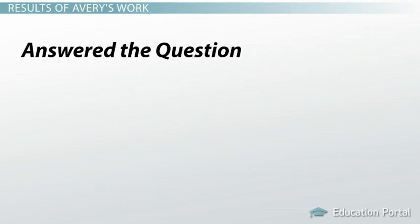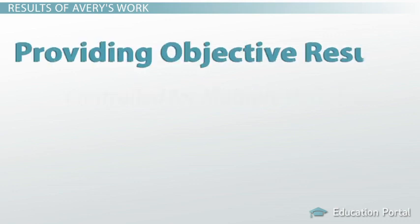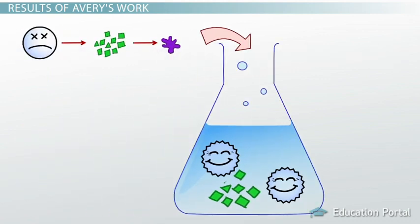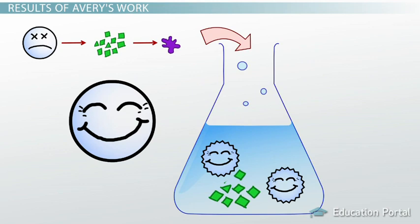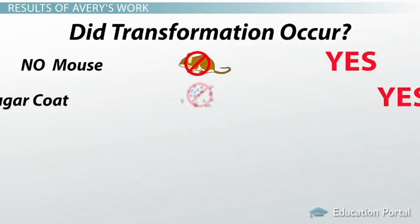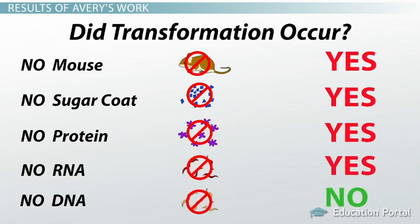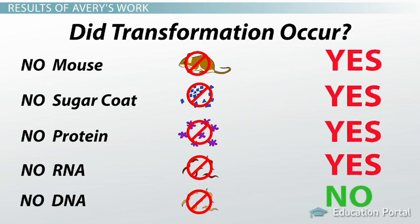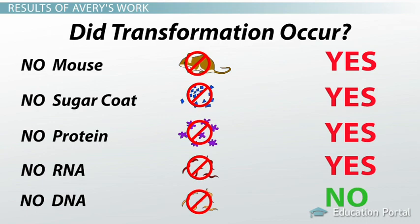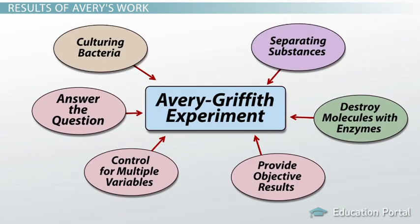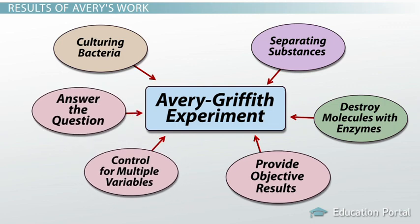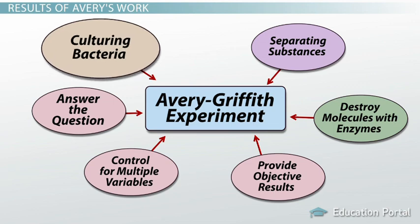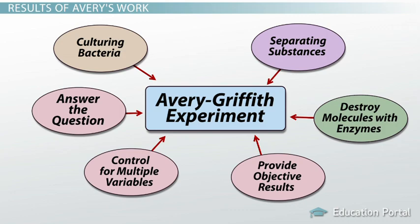We can see that Oswald Avery successfully answered the question and controlled for multiple variables. But what about providing objective results? How did Avery know for certain whether transformation was happening at each step? By looking at the bacteria inside the test tubes, Avery could see whether the R-bacteria had changed into S-bacteria. He simply had to state whether or not he saw the live S strain. Avery's objective results were a series of yes-or-no answers to the question: did transformation occur in the absence of this factor?